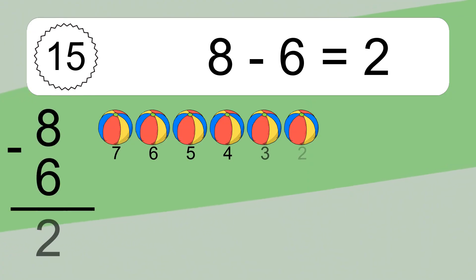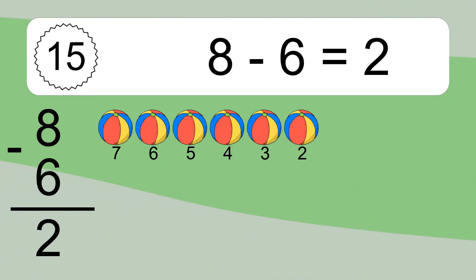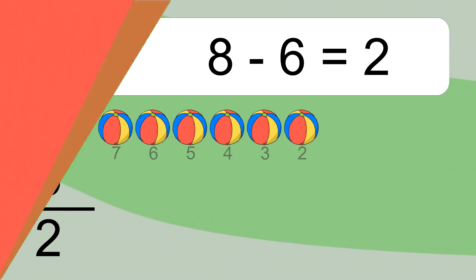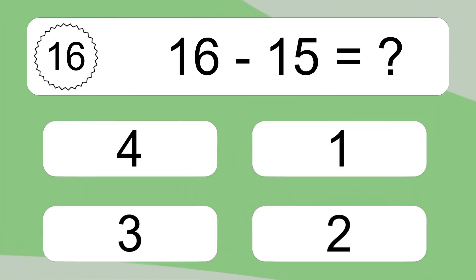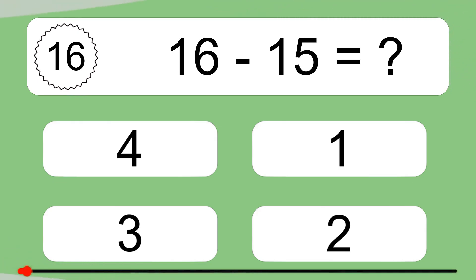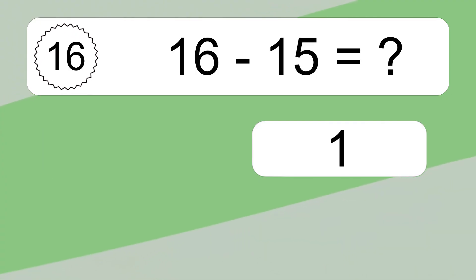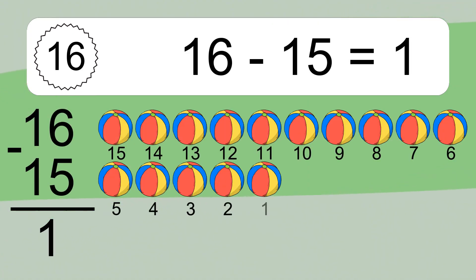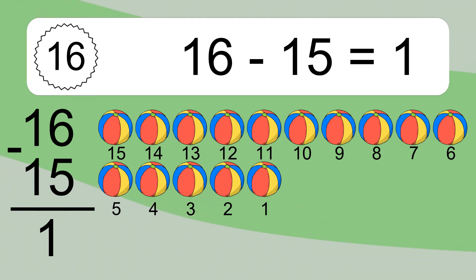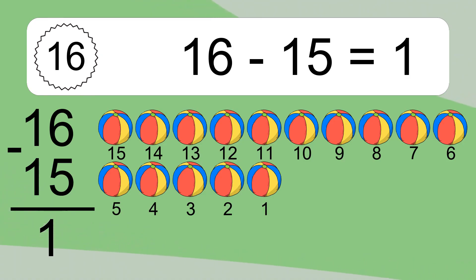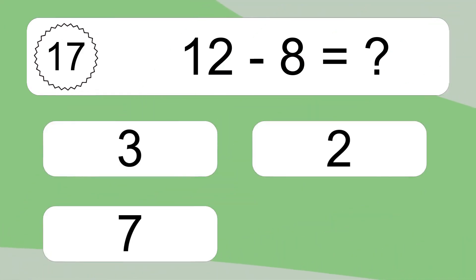8 minus 6 equals 2. Let's count it: 7, 6, 5, 4, 3, 2. 16 minus 15 equals what?